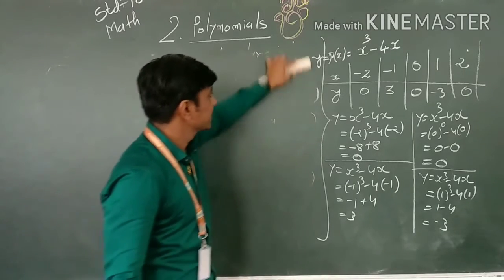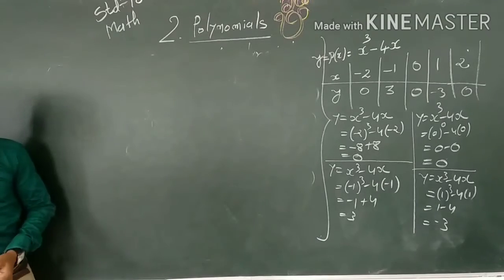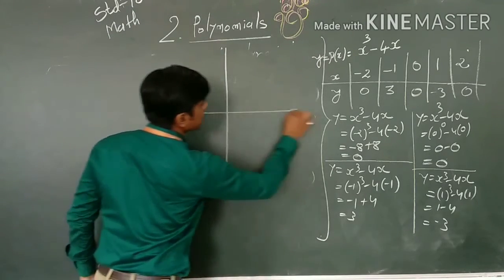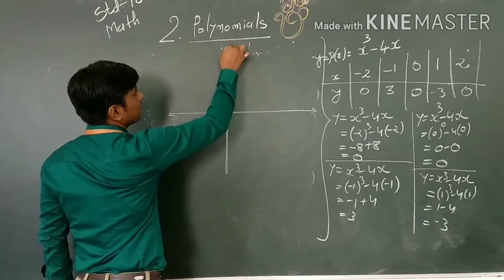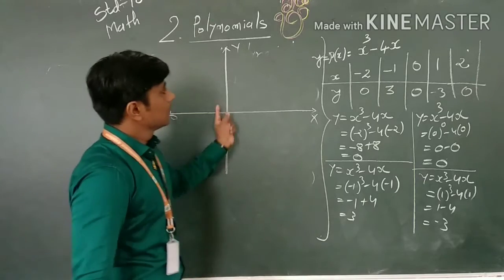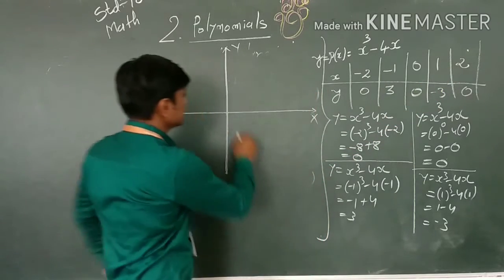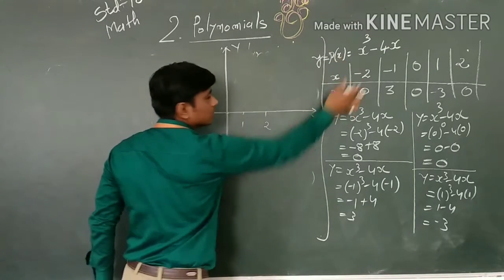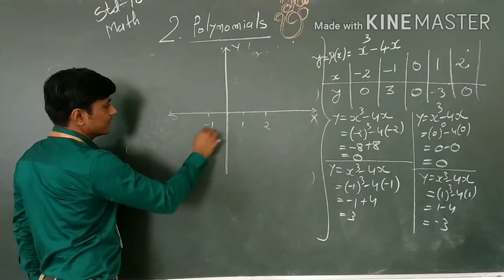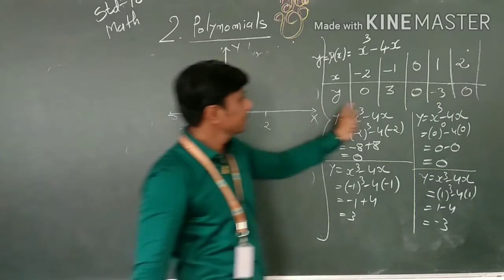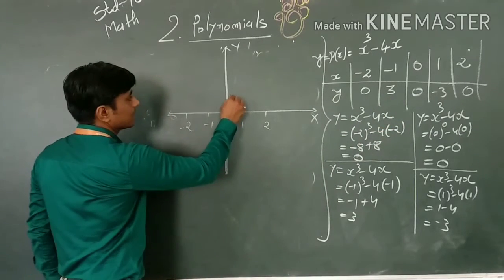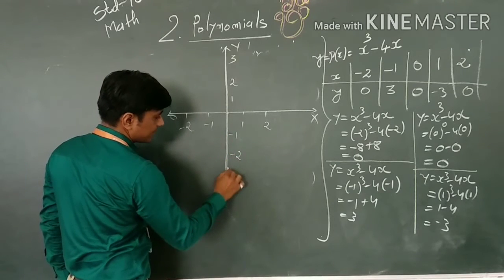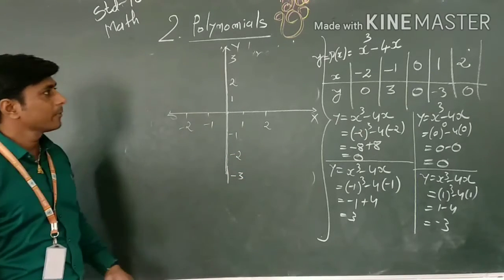Let me sketch a rough graph. This is the x-axis and this is the y-axis. The maximum positive x value is 2, so I mark 1 and 2 on the positive side, and −1 and −2 on the negative side. The maximum positive value of y is 3, so I mark 1, 2, 3 upward and −1, −2, −3 downward.